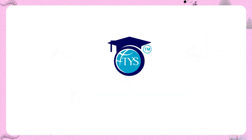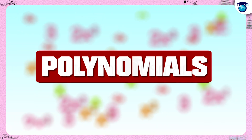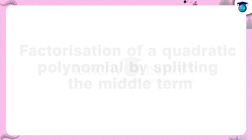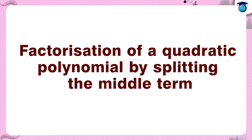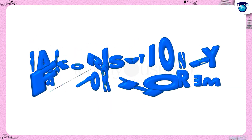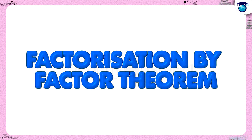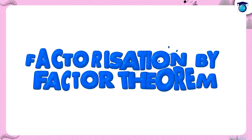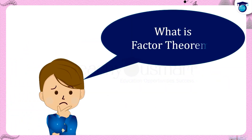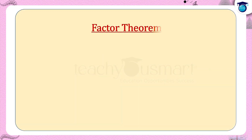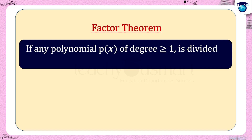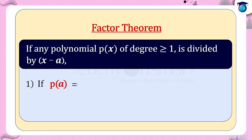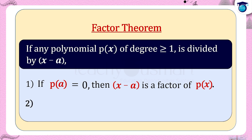Hello students, welcome to Teach You Smart. Let's continue our journey through polynomials. In the last session we saw the factorization of a quadratic polynomial by splitting the middle term. Today let's see how we can apply the factor theorem in the factorization of a quadratic polynomial. The factor theorem states: if any polynomial p(x) of degree greater than or equal to 1 is divided by x minus a, and if p(a) equals 0, then x minus a is a factor of p(x). Conversely, if x minus a is a factor of p(x), then p(a) equals 0.